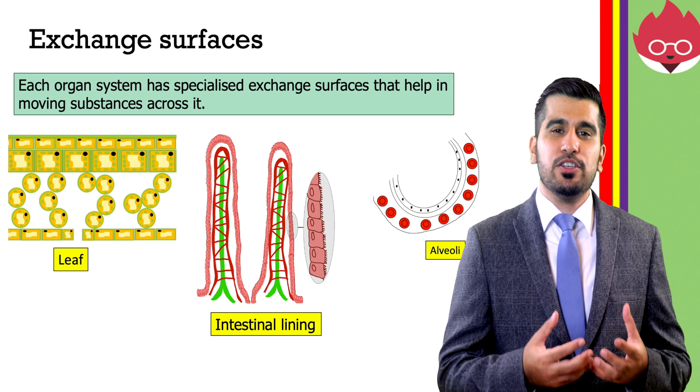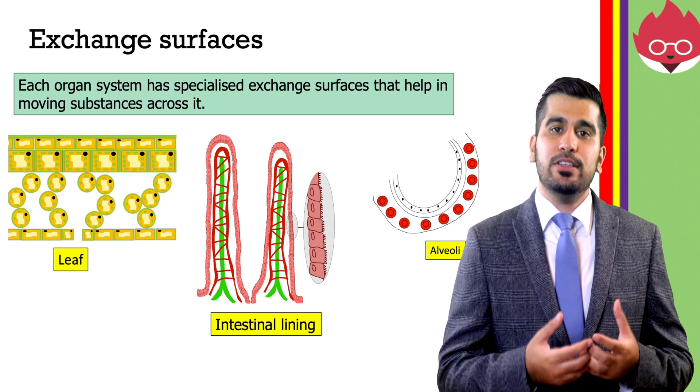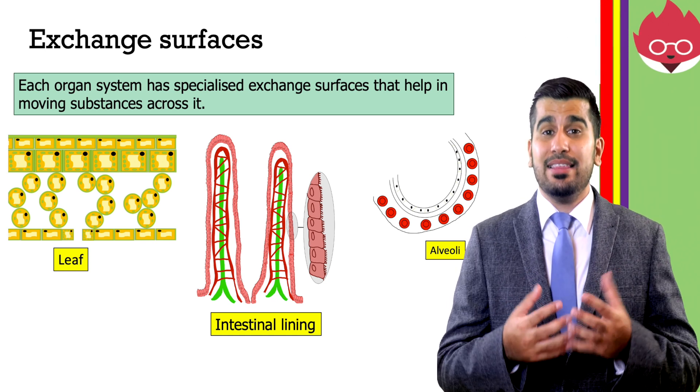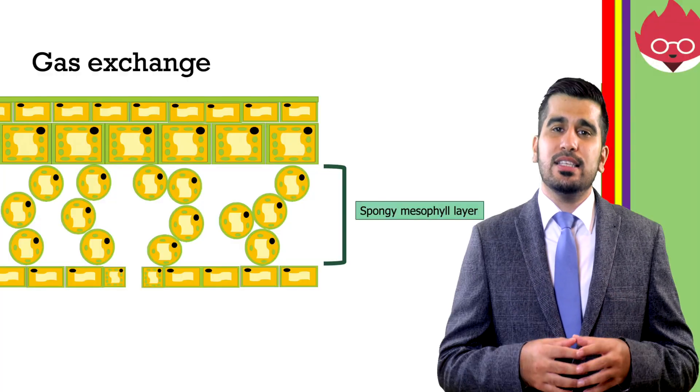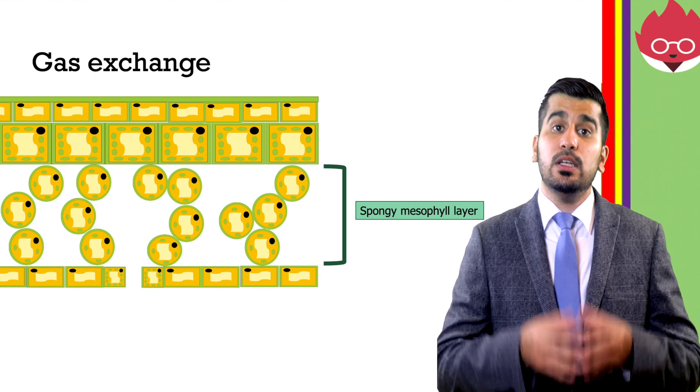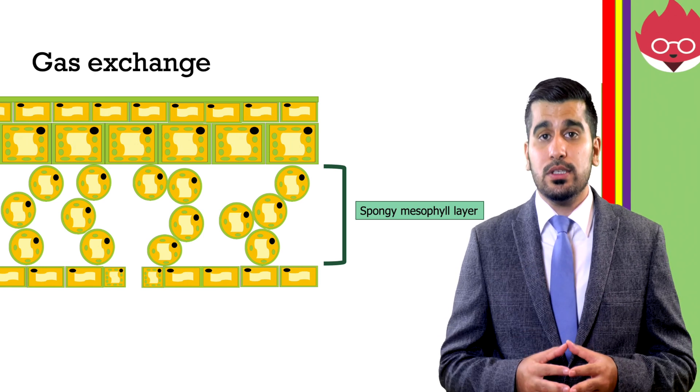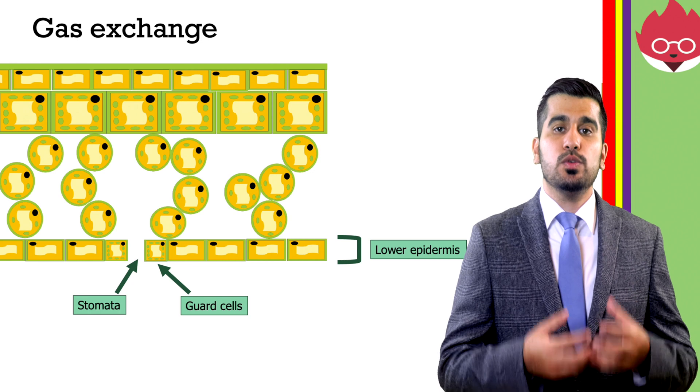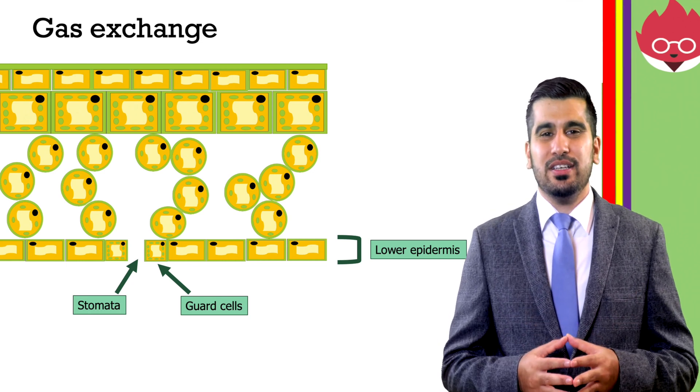Here we'll see three examples of specialised exchange surfaces found in the shoot system, the respiratory system and the digestive system. In the shoot system, leaves increase the surface area to volume ratio due to their flattened structure, which also reduces the diffusion distance. The cells in the spongy mesophyll layer are loosely packed and covered in a thin film of water, together with tiny pores called stomata, which help gas exchange to occur.